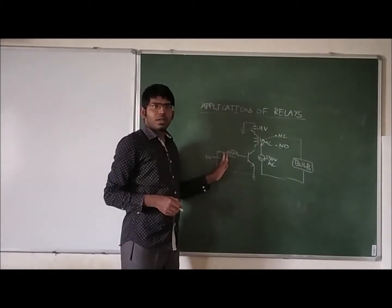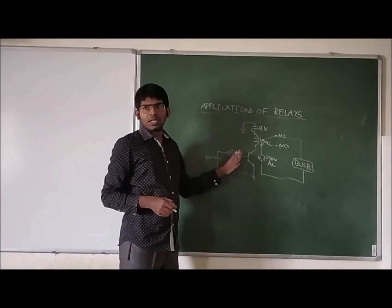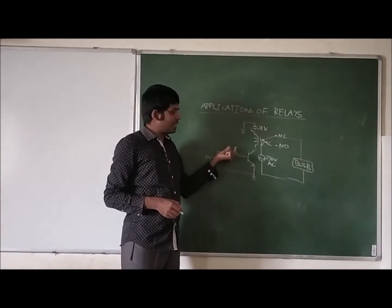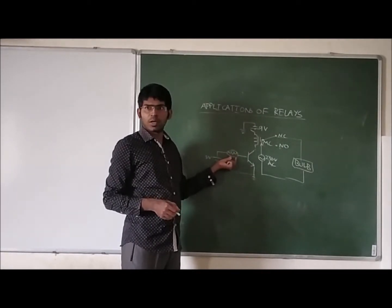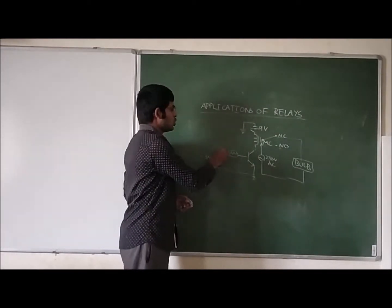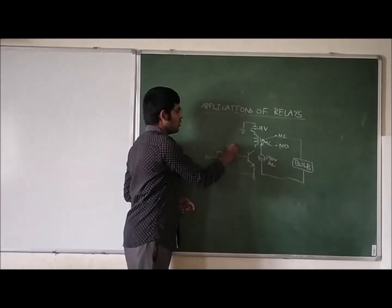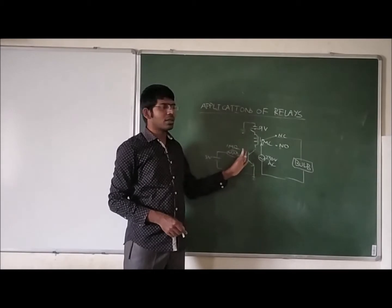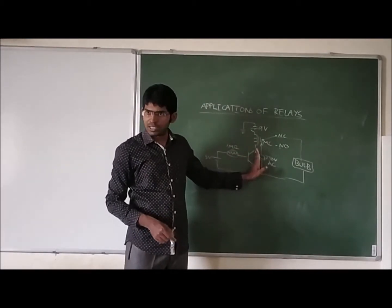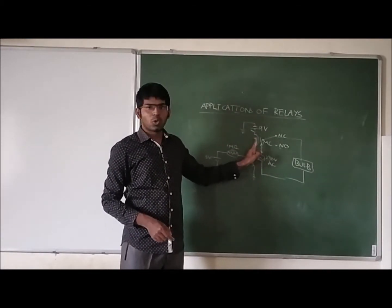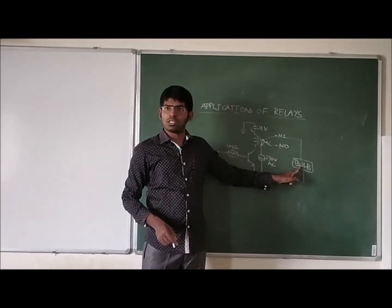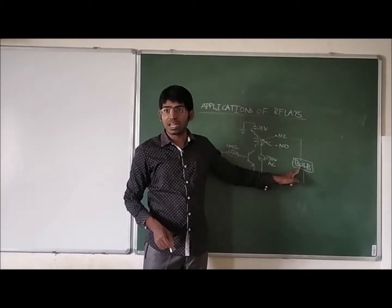When we are giving the 5 volt supply, because there is LDR, until the light falls on this LDR the resistance will not be decreased. It offers huge amount of resistance in the range of 1 mega ohm. So this 5 volt supply does not reach the transistor. Transistor is in off condition. There is no current in the relay coil, so bulb is in on condition. The street light is glowing.